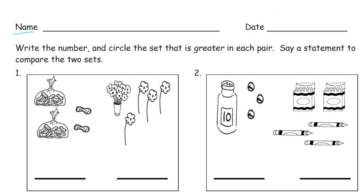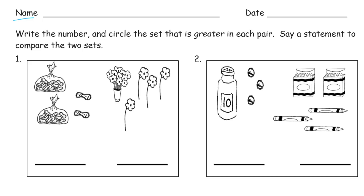We're going to write numbers and circle the set that's greater in each pair and say a statement to compare the two sets. So we're going to say it out loud, it's important to say it out loud. Even if there's nobody else in the room and you're by yourself, say it out loud. Even if you're just hearing me say it or thinking it in your mind is not the same as using your mouth and saying it out loud.